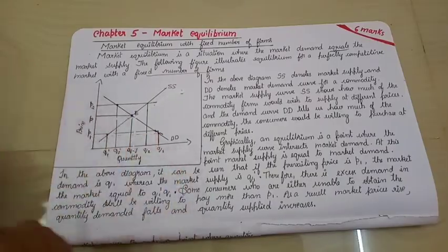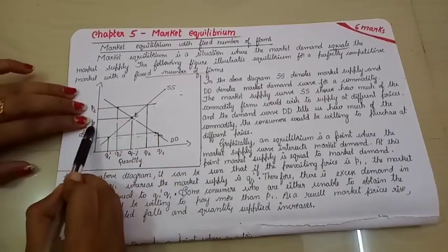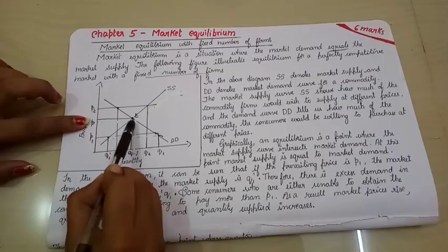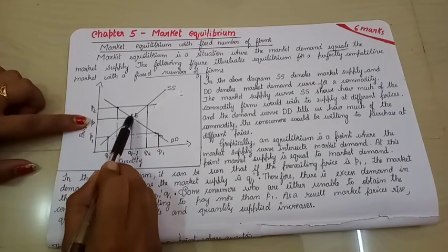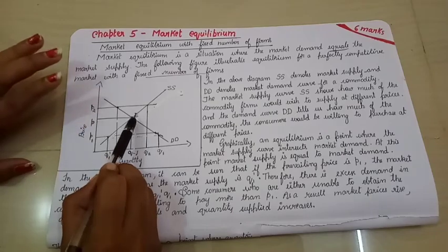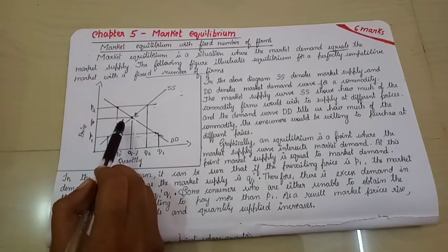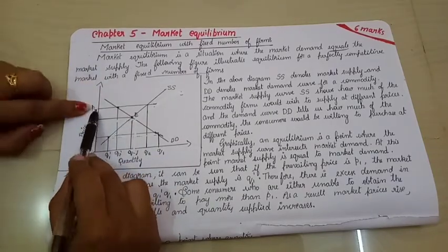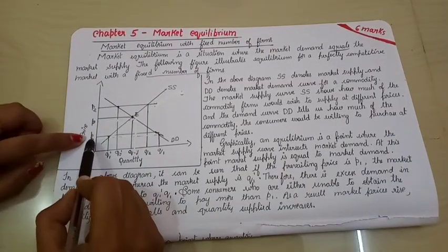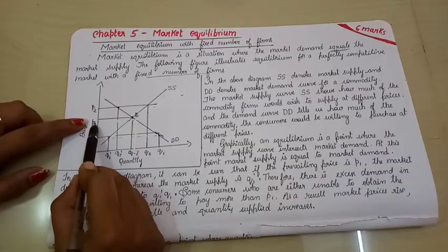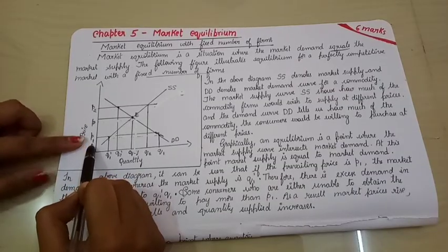Now, what this graph is saying is that this is the equilibrium price, this is the equilibrium quantity, this is the equilibrium point. At this point the market demand and market supply are equal. Now, what you have to see is what happens when the price increases or when the price falls.